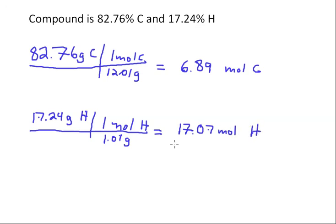And 17.24 divided by 1.01 works out to be 17.07 moles of hydrogen. So we're getting very close to determining our empirical formula. Let's change colors here and consider these values, 6.89, 17.07. We want to find the ratio of these numbers. The easiest way to do that is to divide each of the numbers by the smaller of the two.